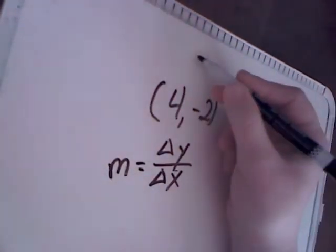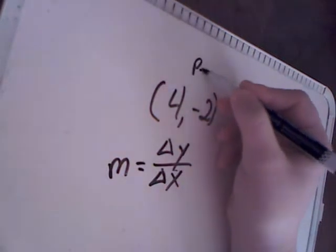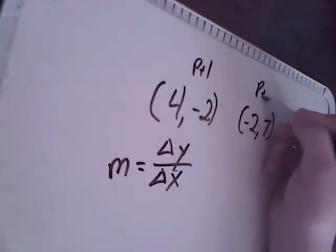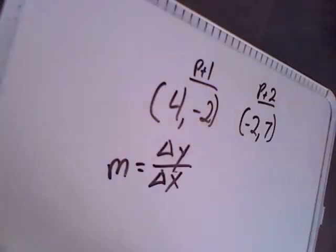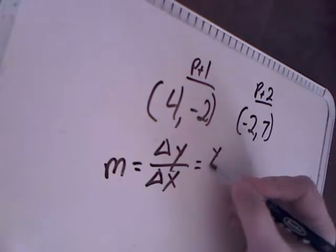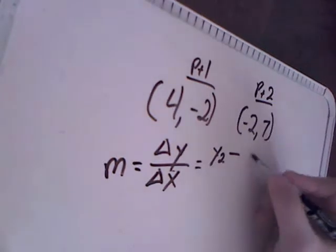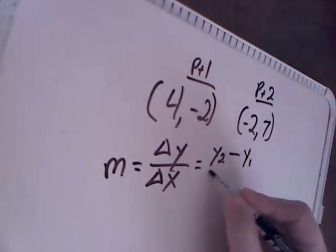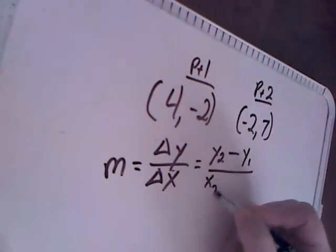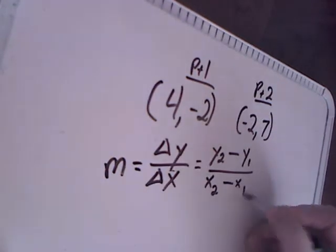Well we have two points here. We have, let's call this point 1, and let's call this point 2. What you're going to do is you're going to subtract y of 2 from y of 1, and you're going to subtract x of 2 from x of 1.